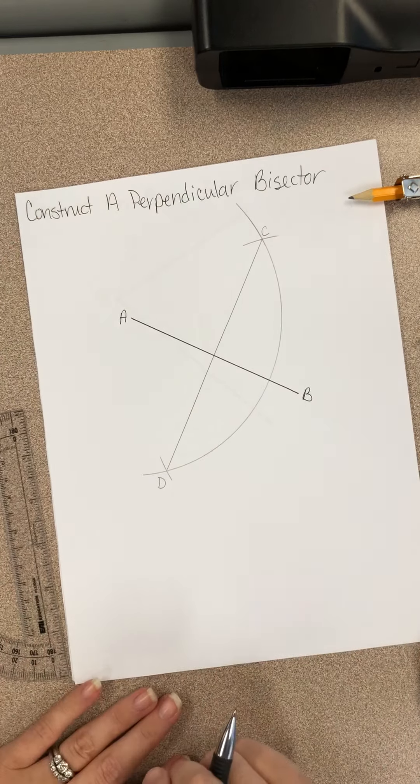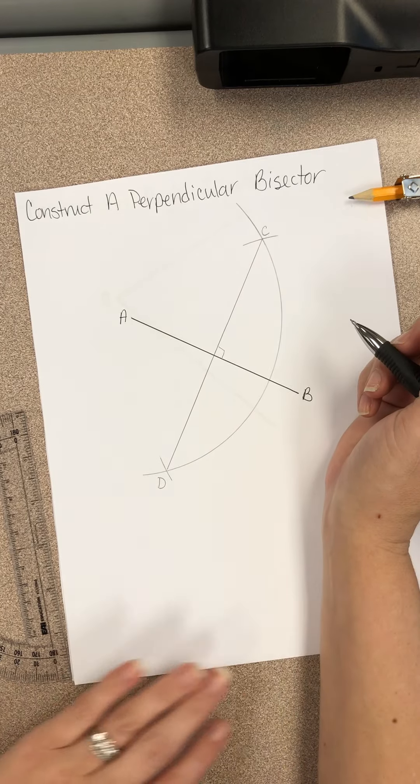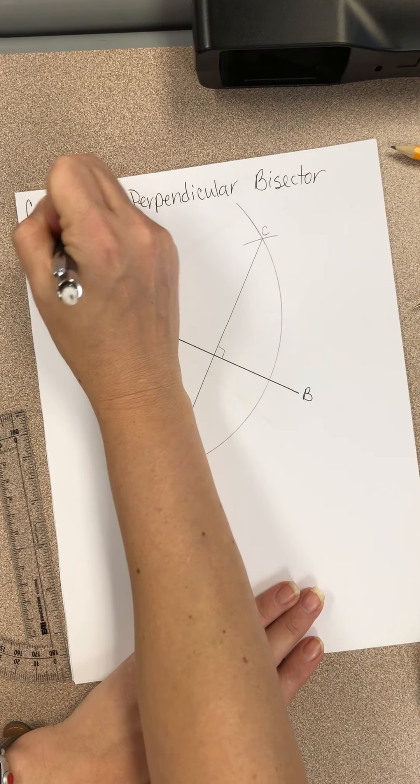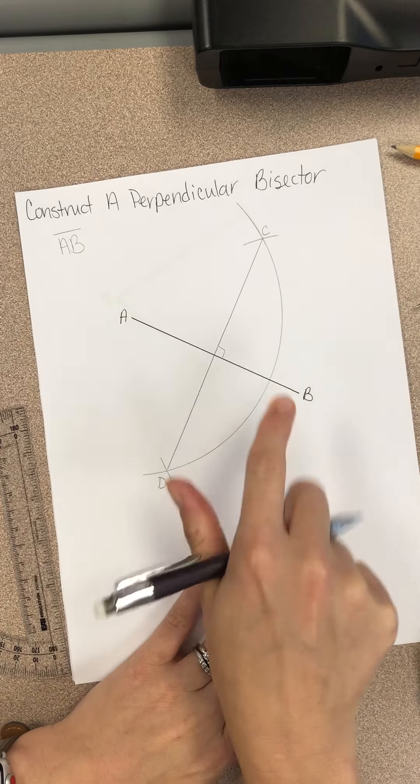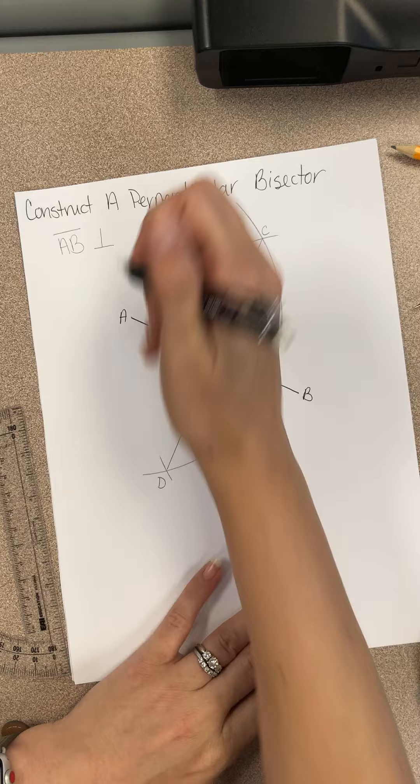And now that's your perpendicular bisector. This does create 90-degree angles on all three of these angles. And the way that we write this is that segment AB is perpendicular to—that's the symbol for perpendicular—CD.